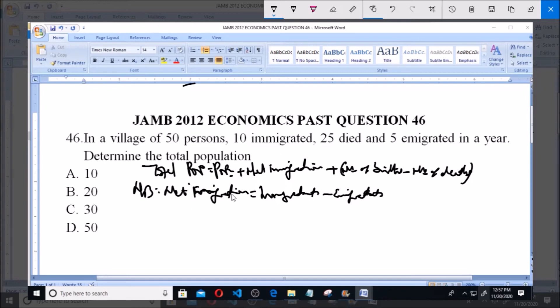So from our question, we have 50 persons. Our net migration is 10 minus 5, which is equal to 5. So we're going to have total population.